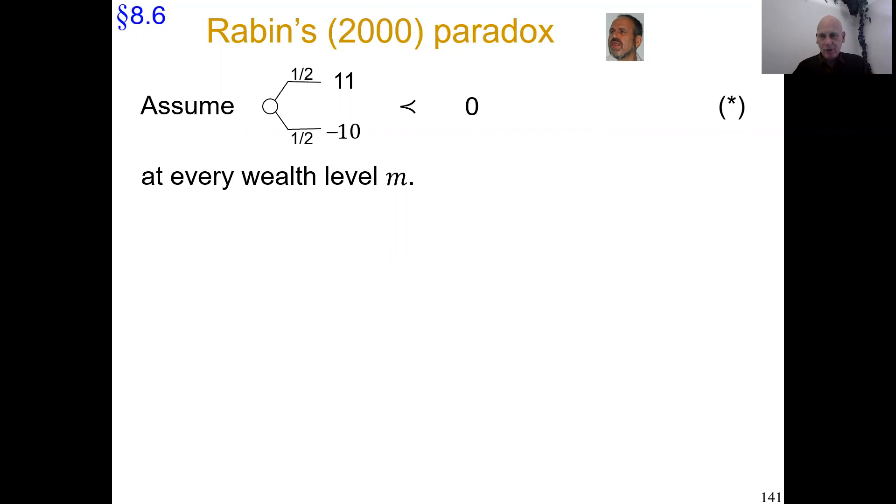In the analysis that follows, I will ignore probability weighting, so I will assume that the W function is linear. One reason is for simplicity, to focus on the reference dependence—the new deviation from the classical model. But it's also empirically realistic. There have been detailed experimental investigations of the Rabin paradox, finding that probability weighting is not really playing a role empirically speaking.